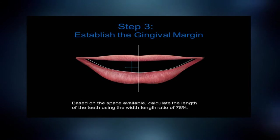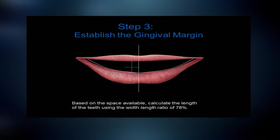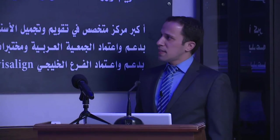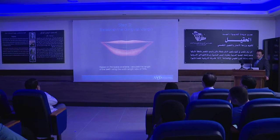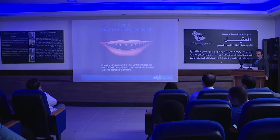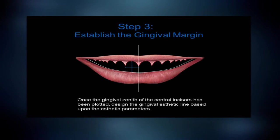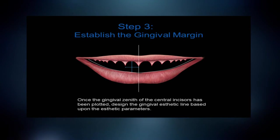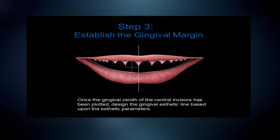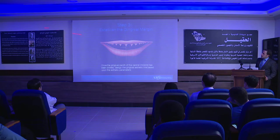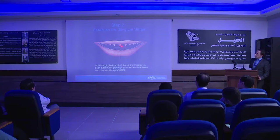Once we establish the midline, we start with the central incisor. According to the rule of 78 percent, the width of the central should be 78 percent of the length of the central. Once we do it on one side, we establish the gingival margin. We first establish the incisal edge position, and then with this 78 percent rule we establish the gingival margin accordingly.